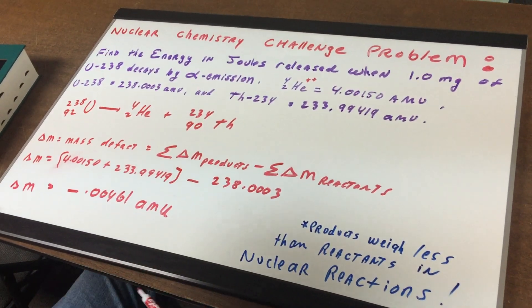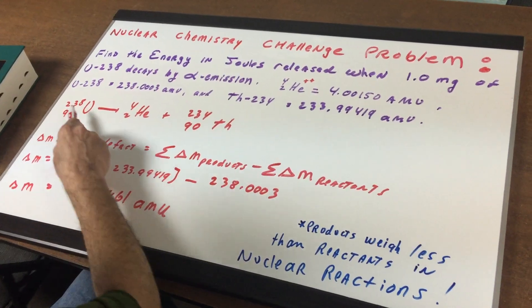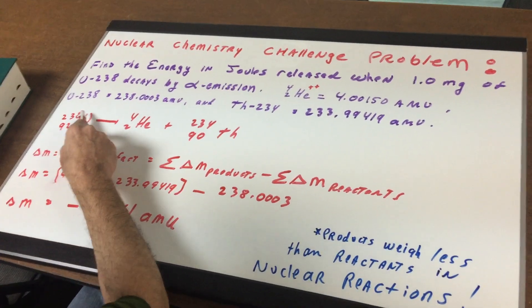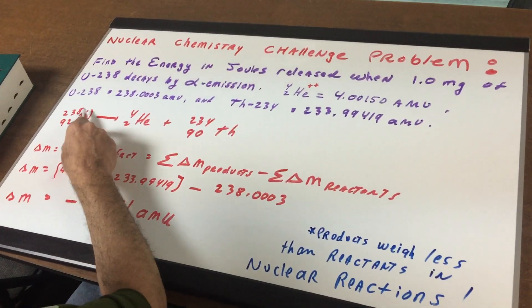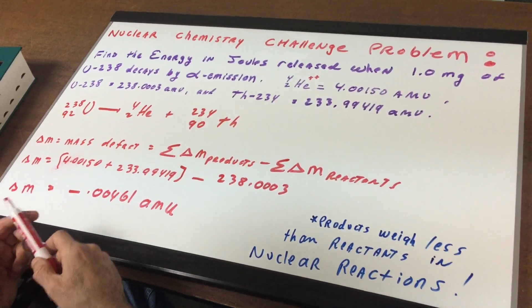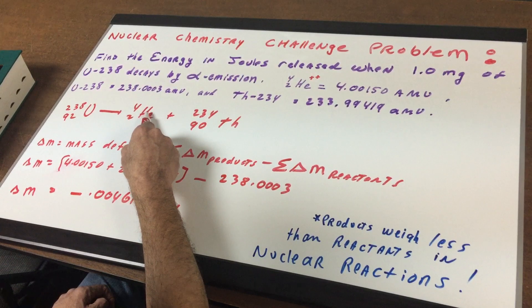The first thing we want to do is to find the energy or how we go about doing it is to write the reaction. So we're going to write 238. You look up the atomic number on the table that's provided for you on the DAT and you're going to get 238-92U. If you split off an alpha particle, that's a 4-2 helium.